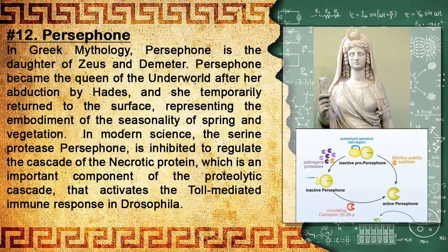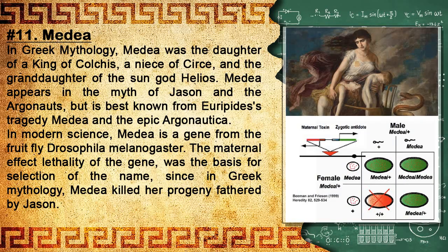Number 12: Persephone. In Greek mythology, Persephone is the daughter of Zeus and Demeter. Persephone became the queen of the underworld after her abduction by Hades, and she temporarily returned to the surface, representing the embodiment of the seasonality of spring and vegetation. In modern science, the serine protease Persephone is inhibited to regulate the cascade of the Necrotic protein, an important component of the proteolytic cascade that activates the Toll-mediated immune response in Drosophila.